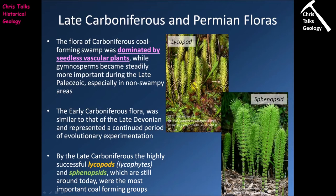In terms of the gymnosperms during this time period, we're going to see them both existing within these coal swamp formations but also pushing out into wider environments, exploiting areas that don't have as much water on the surface. The early Carboniferous flora was similar to that of the late Devonian and represented a period of continued evolutionary experimentation. Every time they came to a new environment they had to adapt, and so we see the appearance of numerous new species.